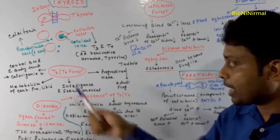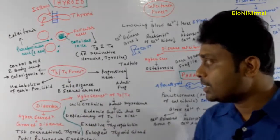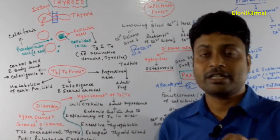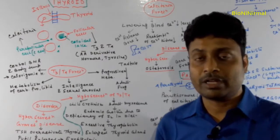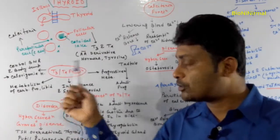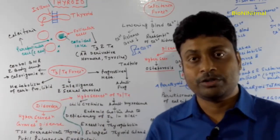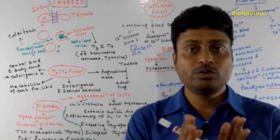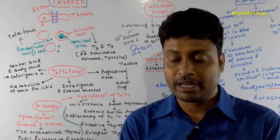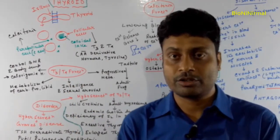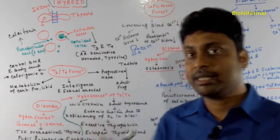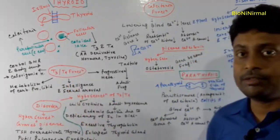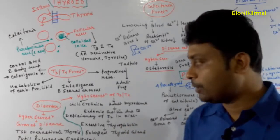T3 is actually formed by combining monoiodotyrosine and diiodotyrosine, and this is called triiodothyronine. T4 is formed when two diiodotyrosine molecules combine, and this forms tetraiodothyronine. So these are called T3 and T4, also referred to as thyroxine.